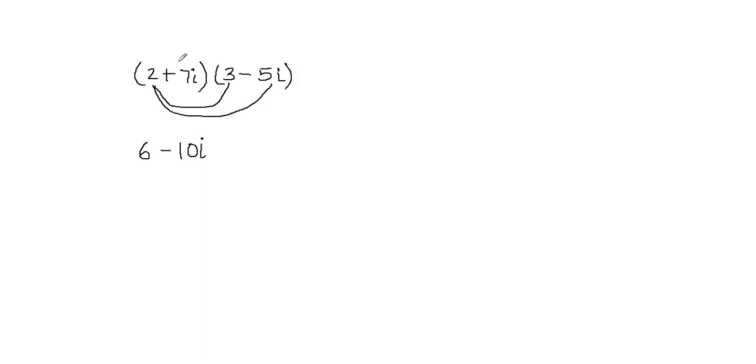Now we're going to multiply positive 7i with 3, and then we're going to multiply positive 7i with negative 5i. So 7i times 3 will be equal to positive 21i, and then positive 7i times negative 5i will be equal to negative 35i squared.